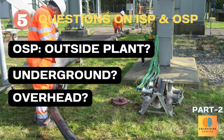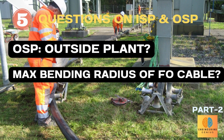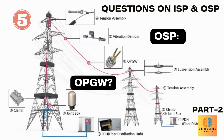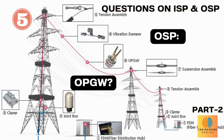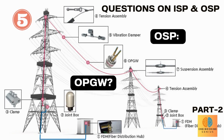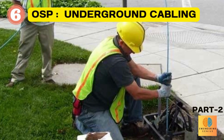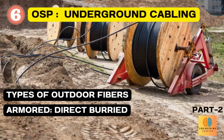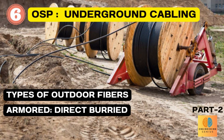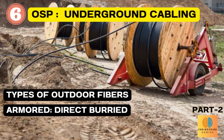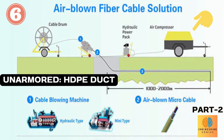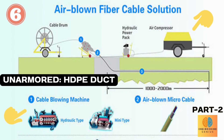Fiber can be laid underground or overhead. A common question is: what is the maximum bending radius of the outdoor fiber cable? The answer is 20 times the outer diameter of the cable. Another question can be on OPGW — an optical ground wire is a type of fiber cable used in overhead power lines that combines the functions of grounding and communications. For underground cabling, there are armored and unarmored fiber cables. Armored cable can be buried directly in the trench, with proper sand bedding and backfilling as per telecom standards. Unarmored cable can be installed using the air blowing technique through HDPE duct, using an air compressor of more than 7 bars pressure and pneumatic or hydraulic blowing machines.